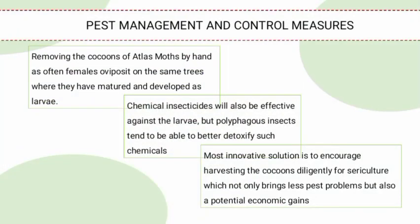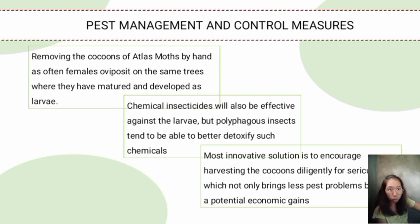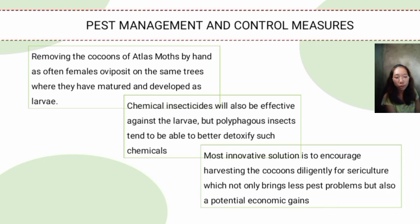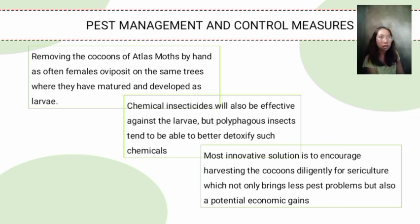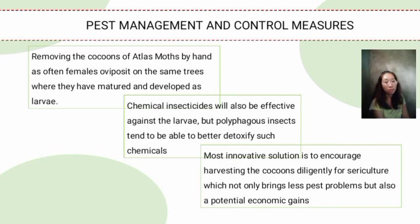For pest management and control measures: first, removing the cocoons of atlas moths by hand is effective, as females often deposit eggs on the same trees where they matured and developed — and the cocoons are large enough to grab by hand. Second, chemical insecticides will also be effective against larvae, but since the larvae are polyphagous and equipped with detoxification enzymes, they may be able to detoxify such chemicals. The most innovative solution is to encourage harvesting the cocoons diligently for sericulture, which not only reduces pest problems but also provides a potential economic benefit.